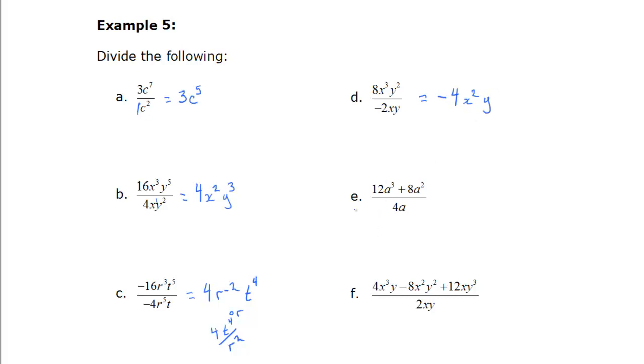e and f is where we see the rule we noted before. So we have an addition in the numerator. So the first step is to write it in two parts. So that we have 4a in the denominator of each. And now each of these we treat like the first four questions. So 12 over 4 is 3. a cubed over a is a squared. 8 over 4 is 2. a squared over a is just a.